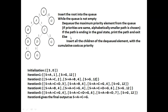The loop continues since the queue is not empty. The maximum priority element is A with path cost 1, so it is picked. A is not the goal, so its children B and C are expanded. The path S→A→B has path cost 4 and S→A→C has path cost 2. The queue now contains: S→A→C with cost 2, S→A→B with cost 4, and S→G with cost 12.